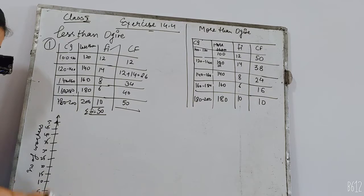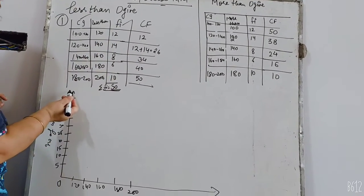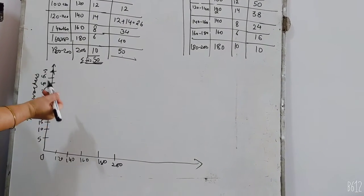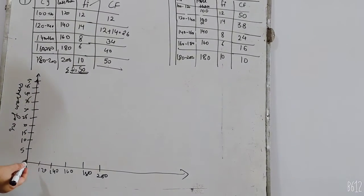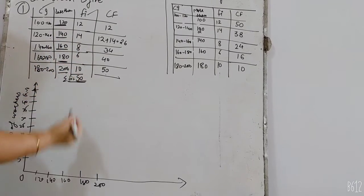Now, how do you draw the graph? The frequency is 50 as maximum. I have 5-5 as the gap. You can increase the gap, you can adjust the gap. Then, you have less than - 120, 140, 160, 180, 200.